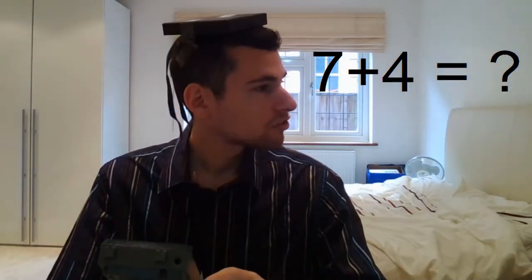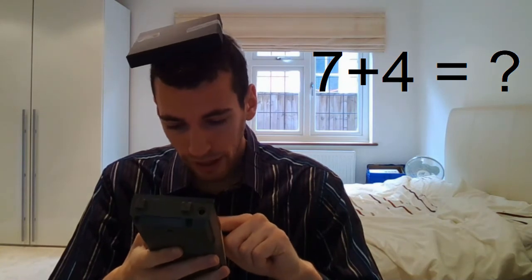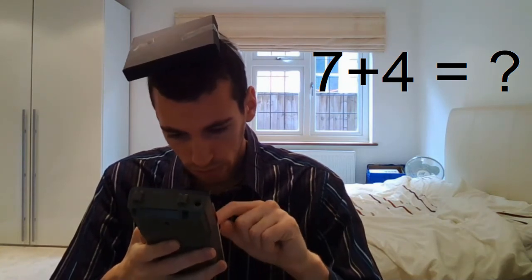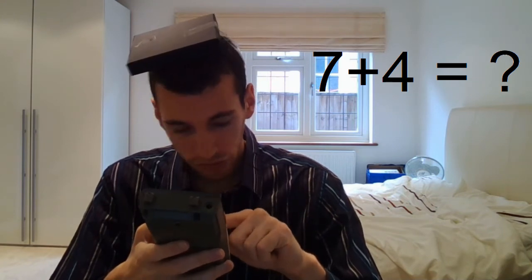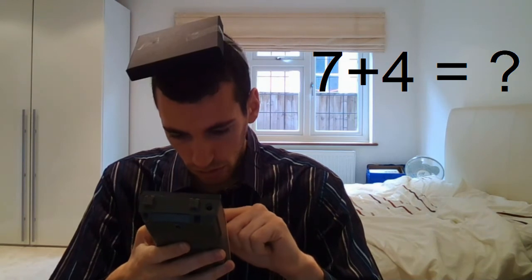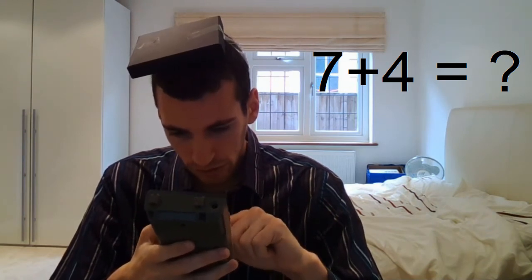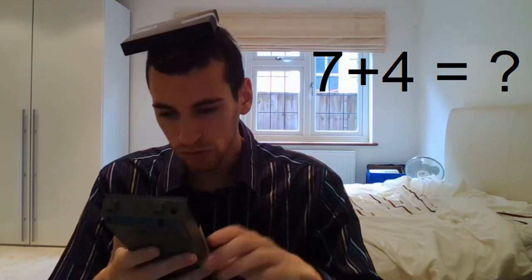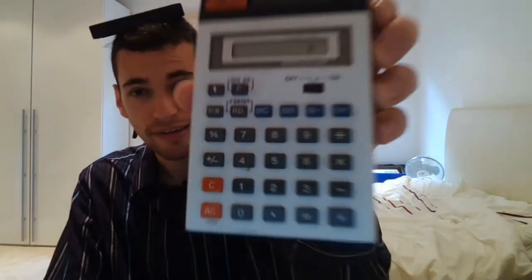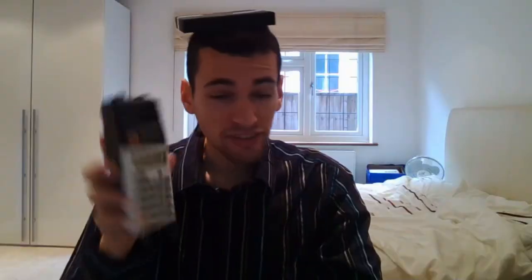Some batteries have now been located, so let's complete this dreaded maths problem once and for all. Okay, so that's 7 times by the power of square roots, plus 4, carry the 1, times 95, plus 6, minus a, plus x7, equals. According to the calculator, the answer is P. Thanks to this trusty calculator, another sum was solved.